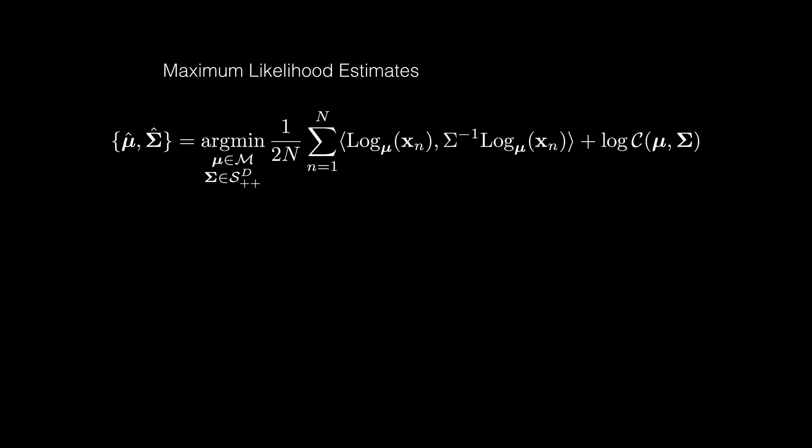Then we can get the maximum likelihood estimates of the land by solving the following optimization problem. However, this is non-convex and does not have a closed-form solution. Thus, we solve it with block-coordinate descent.